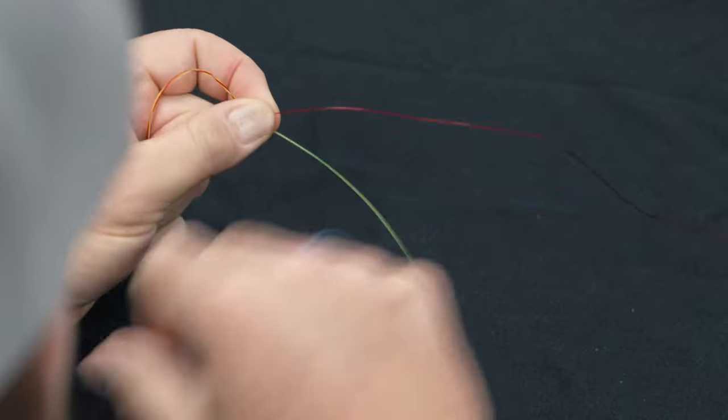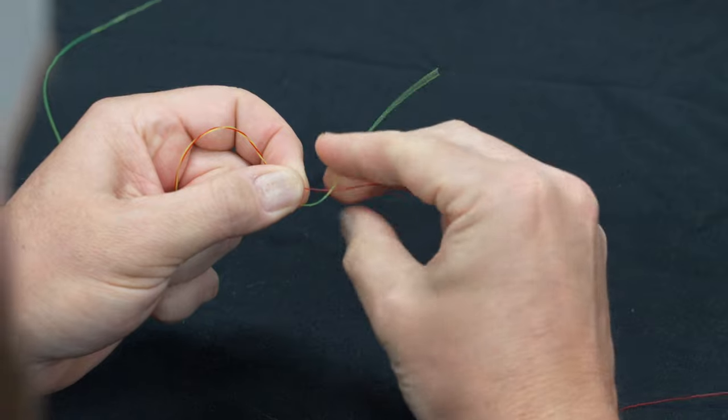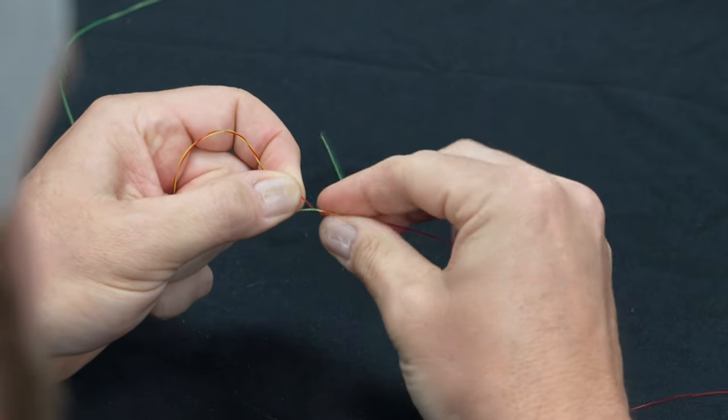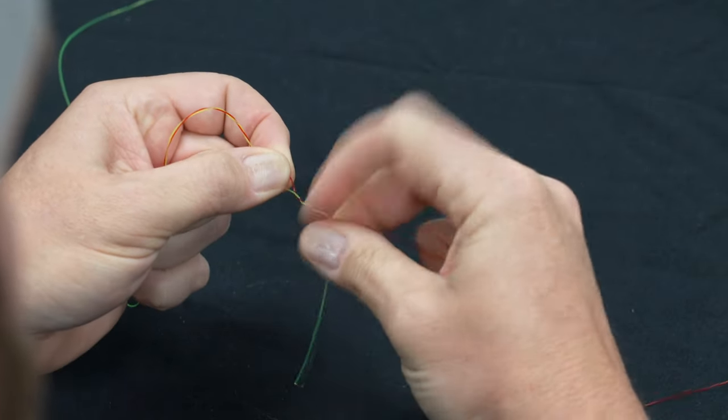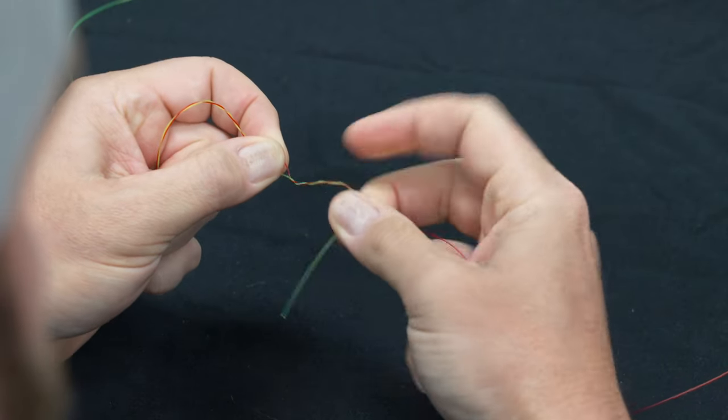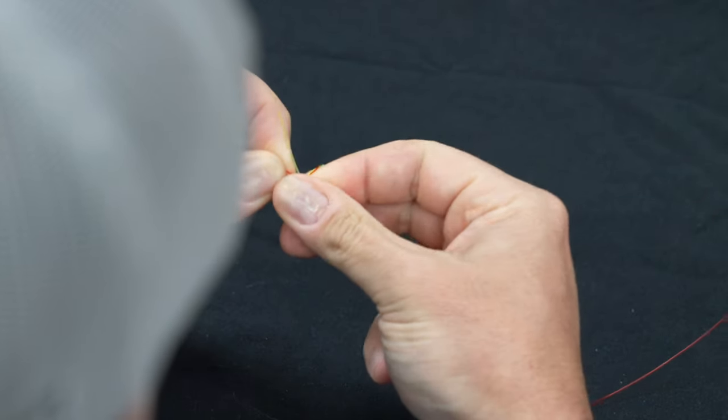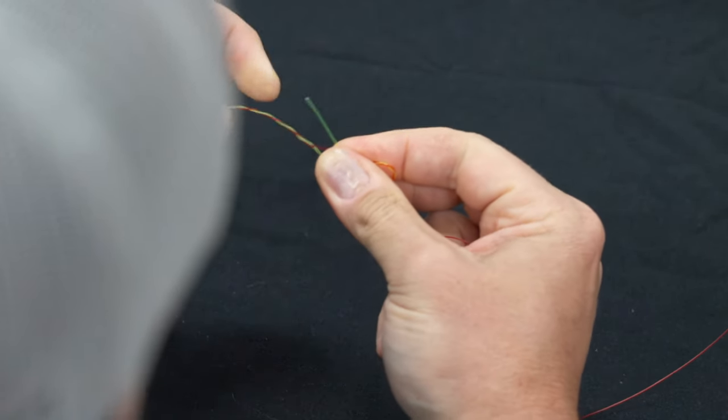And then from there I'm just going to do another five twists if I can get the line to cooperate: one, two, three, four, and five. And then from there this line has to go through the center—that little space I created—and sometimes you have to hold that to come over here.